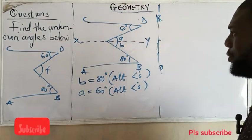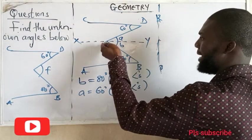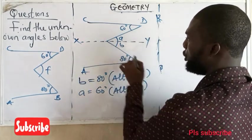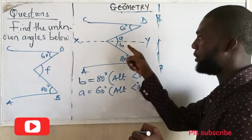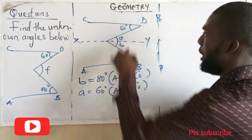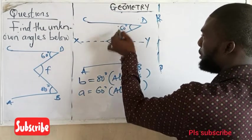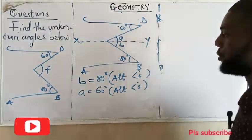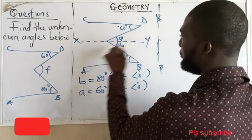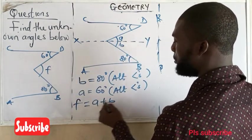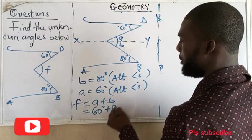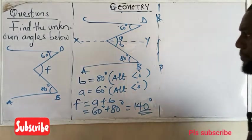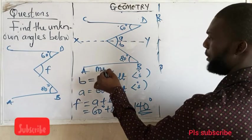I notice that B and A are automatically alternate angles. So B equals 80 degrees — alternate angles. And A equals 60 degrees — alternate angles. Alternate angles are recognized by a Z shape: if the shape forms a Z and one angle is 80, then the opposite angle is also 80. So F equals A plus B: 60 degrees plus 80 degrees equals 140 degrees. That is the first method.